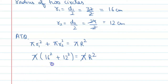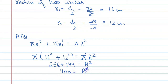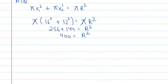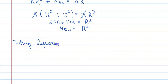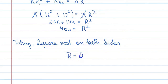16 raised to power 2 means 256, and 12 raised to power 2 means 144, which is equal to capital R square. So here we get 400 equal to R square. Taking square root on both sides, we get R is equal to 20.